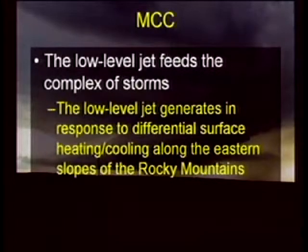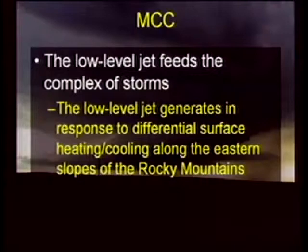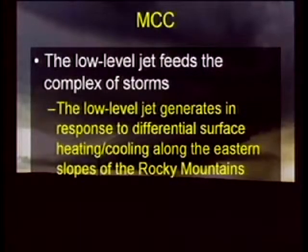The low-level jet itself often generates in response to differential surface heating or cooling along the eastern slopes of the Rockies — just the opposite of how the storms get initiated. The storms initiate from heating of the Rocky Mountains; the low-level jet actually forms from the cooling of the eastern slopes. You get cool air that sinks, it bends down the height lines, and you get a pressure gradient force with an easterly component. Coriolis kicks in and turns that to a more northerly component, helping feed the storms through the nocturnal development of the low-level jet.